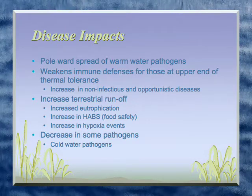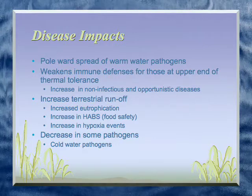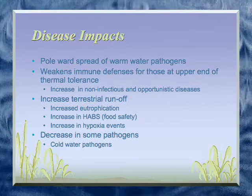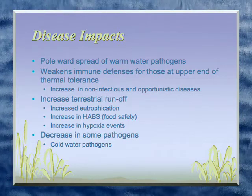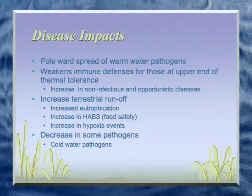Another impact — with storm surges and that type of thing — will be an increase in terrestrial runoff, which increases eutrophication, blooms of algae, and things like that. This can impact food safety and can increase or decrease oxygen in the water. On the positive side, cold water pathogens will probably decrease as it warms, though cold water species will also see their area shrink — so it's kind of tit for tat.